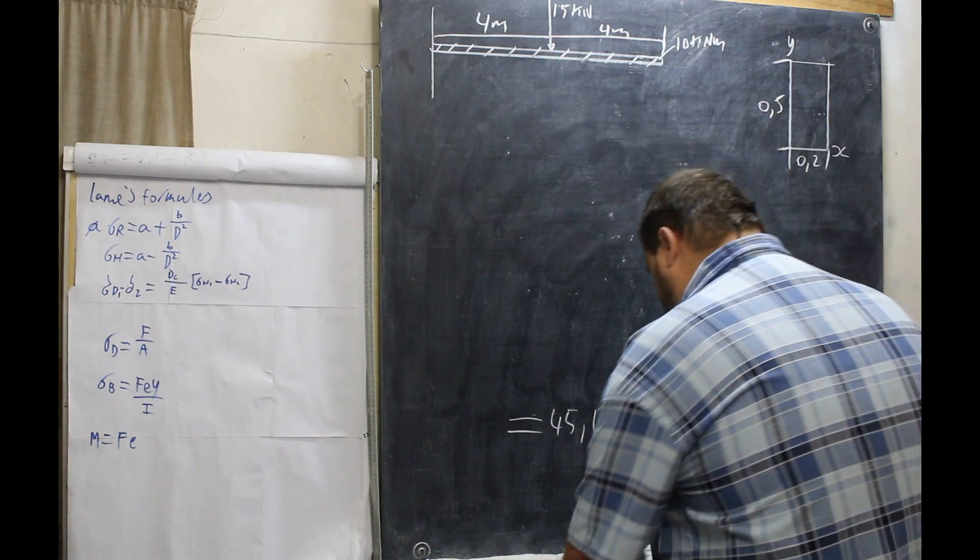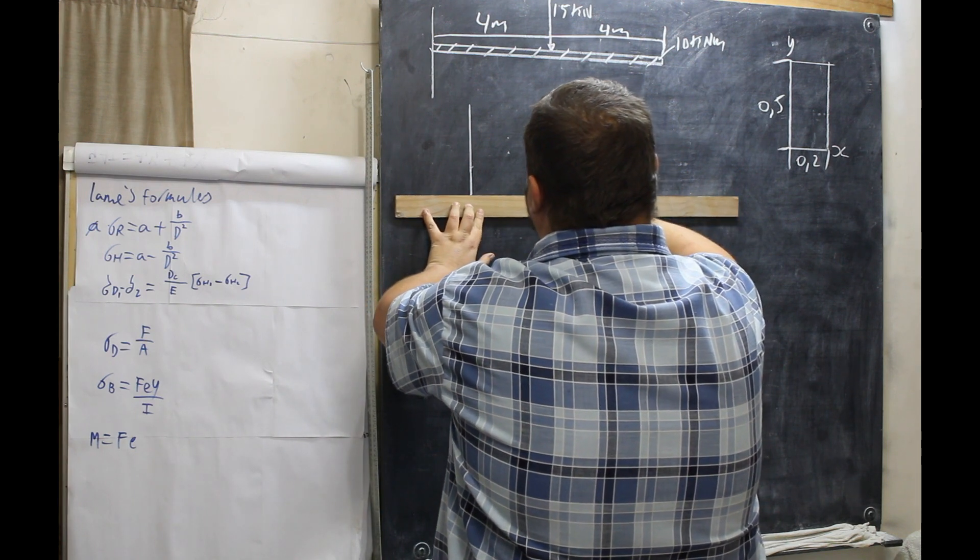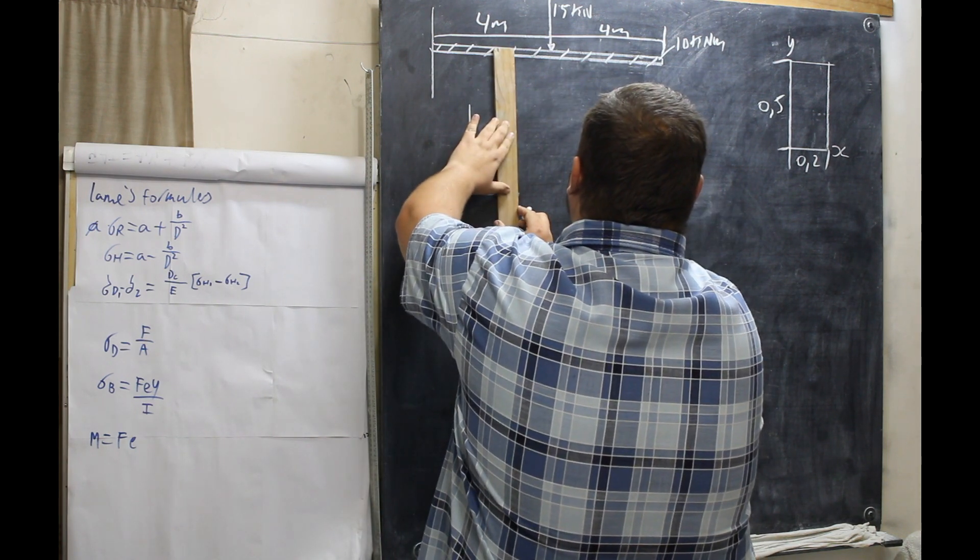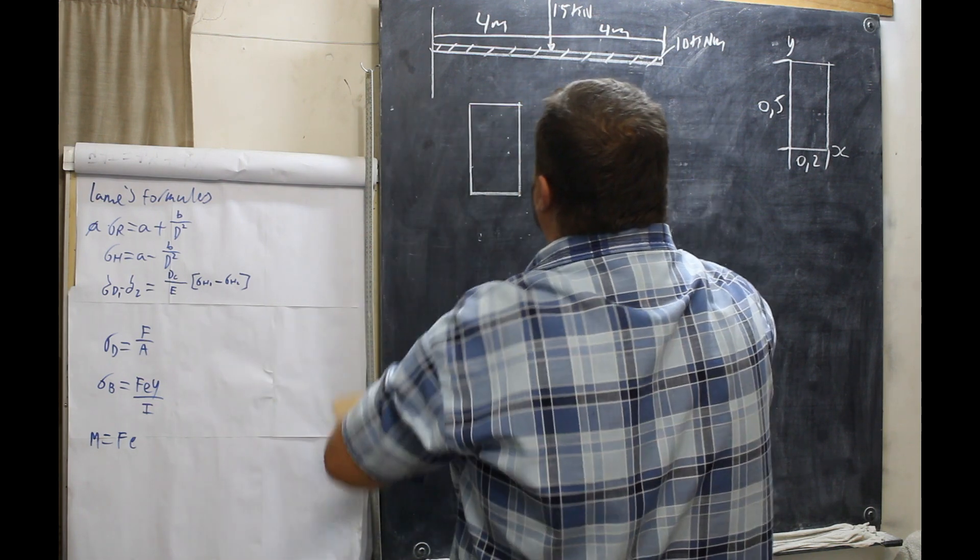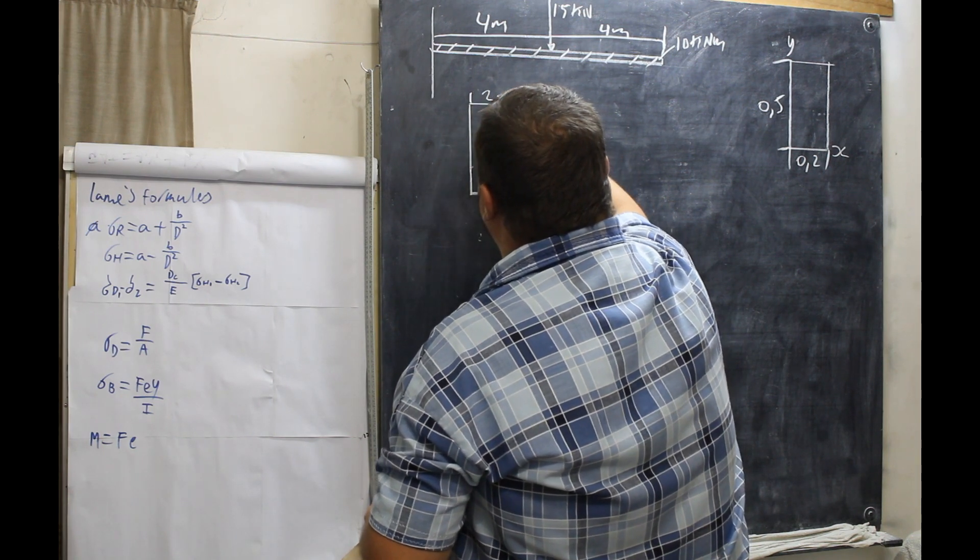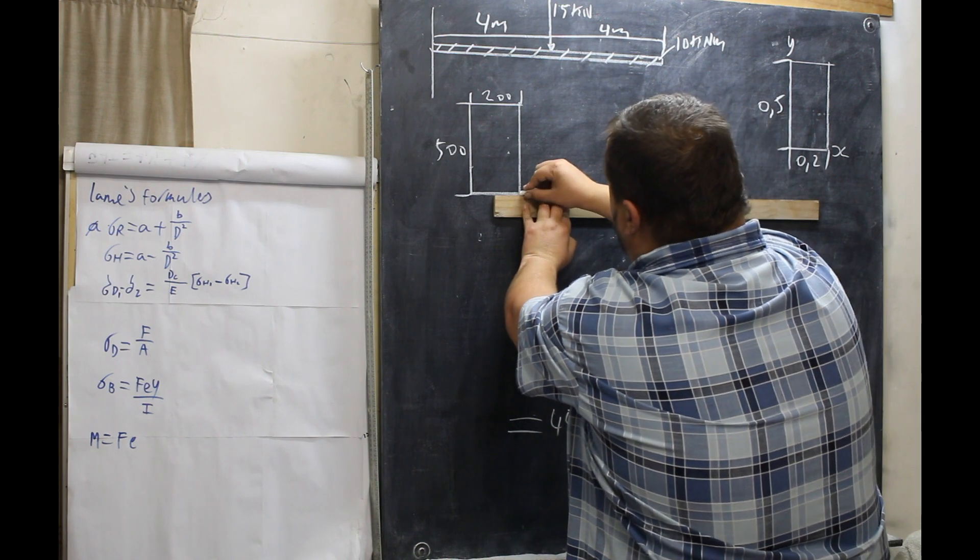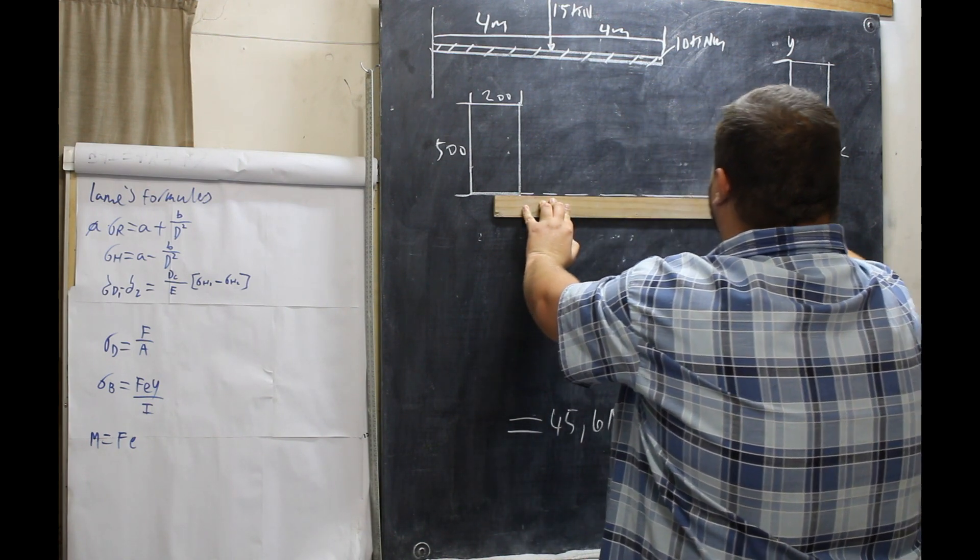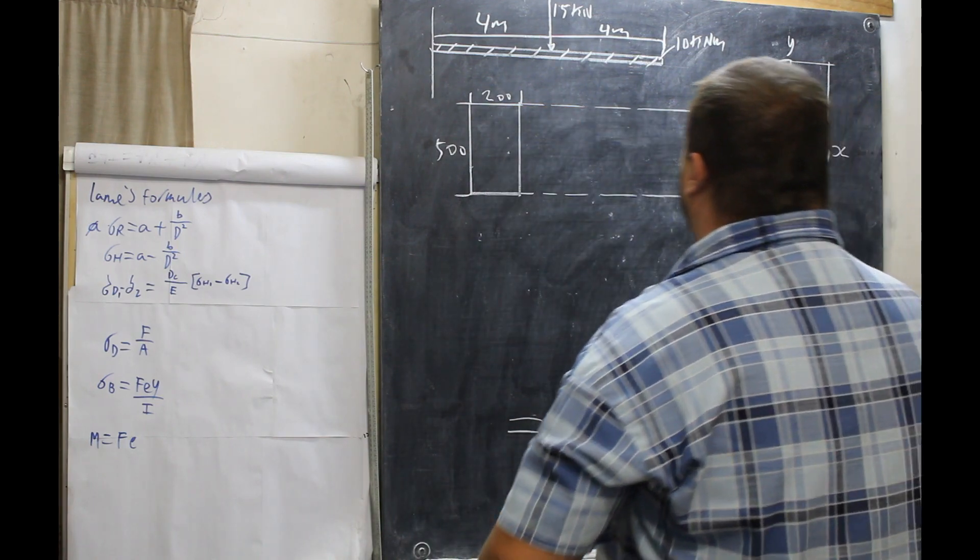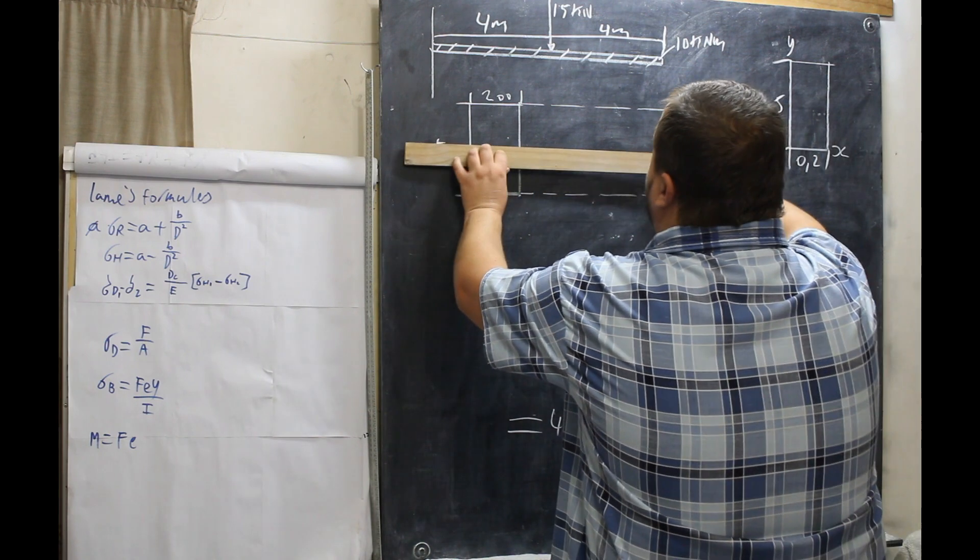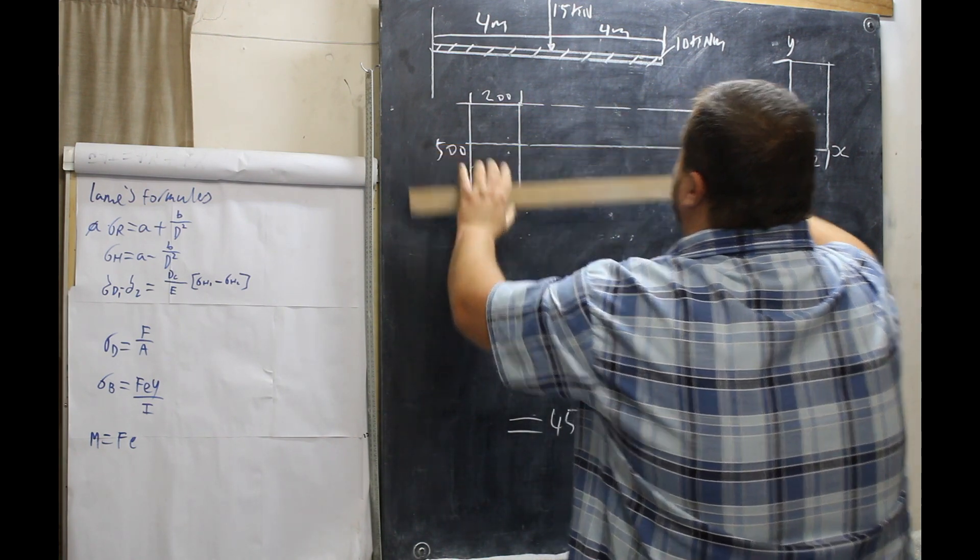All you have to do is draw a rectangular cross section. Draw the rectangular cross section. Get that all nicely done. Now this is 200 and that is 500. Now we're going to draw dotted lines. Okay. Now next step is right in the middle. Right in the middle.